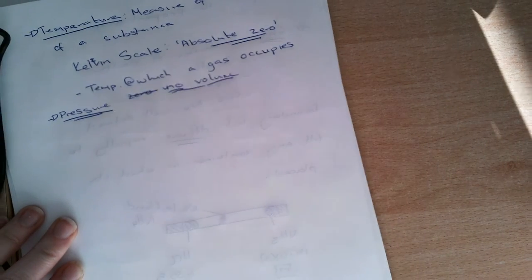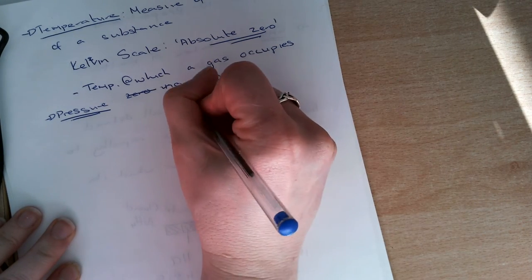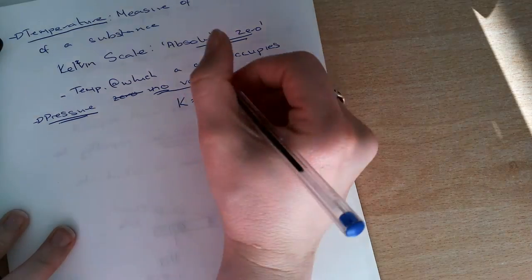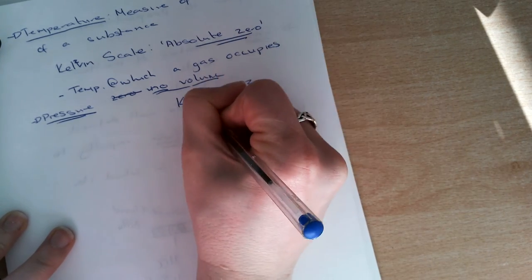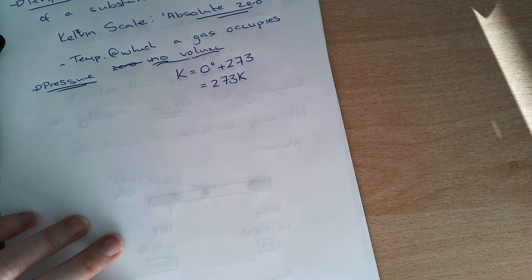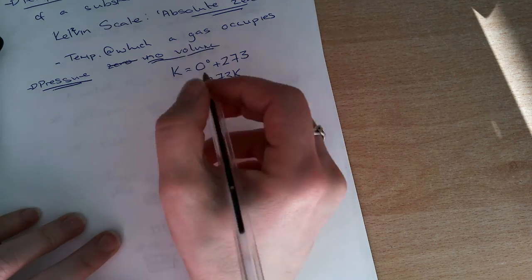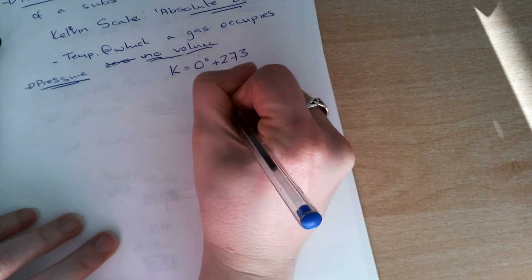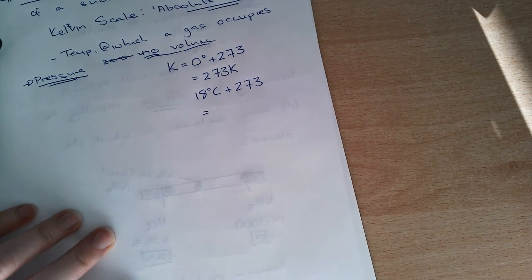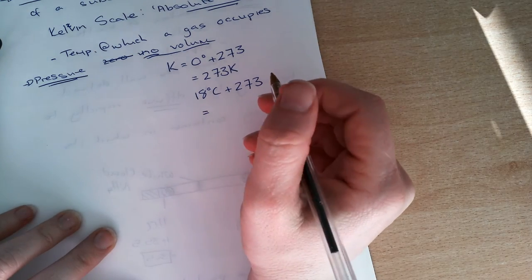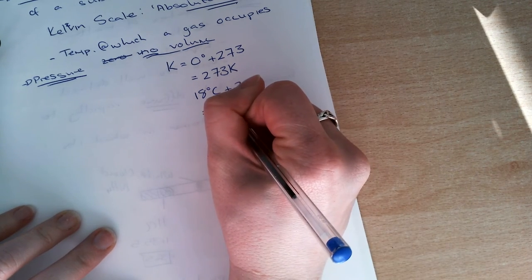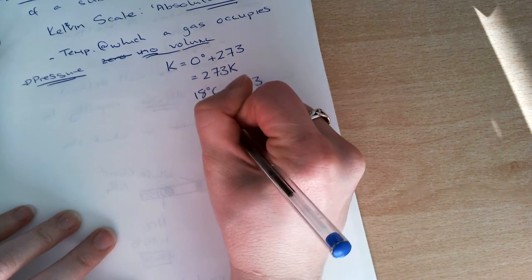In order to change from degrees Celsius, so if I'm given a value in degrees Celsius, I have to add on 273. That would give me 273 Kelvin. If I'm given 18 degrees Celsius, again, I'd have to add on 273 there. And that gives me 281.